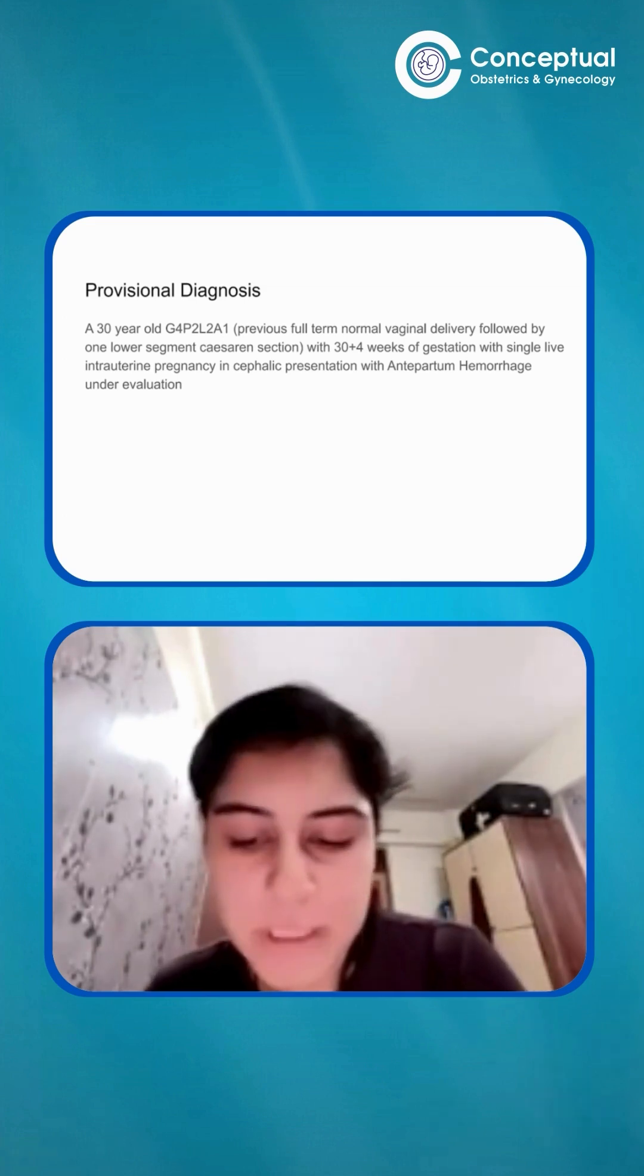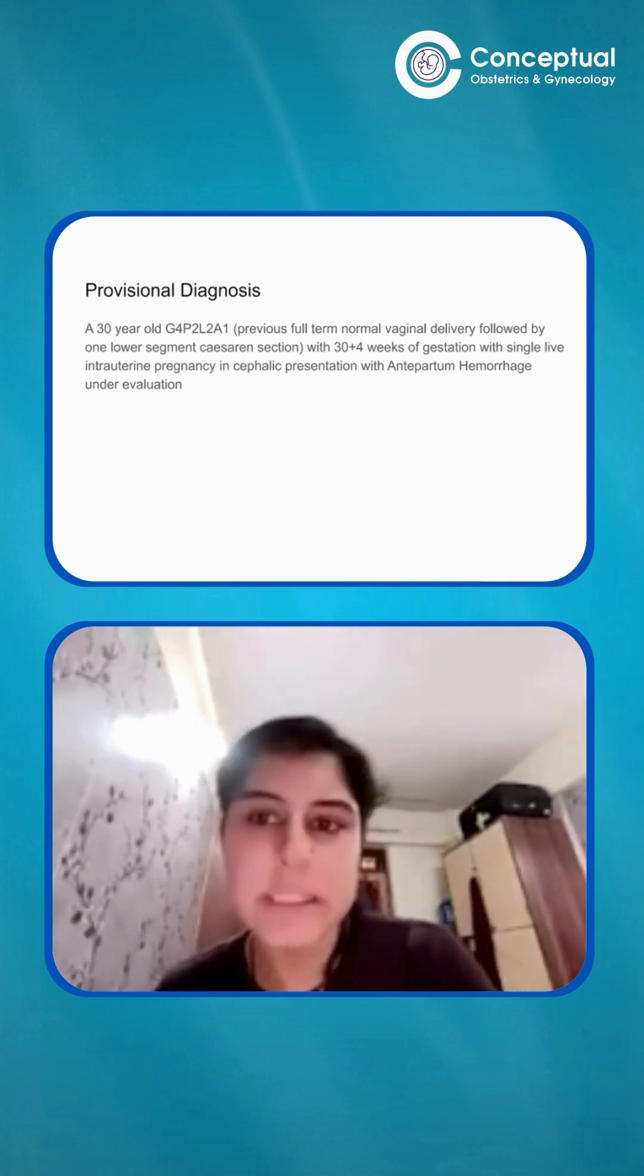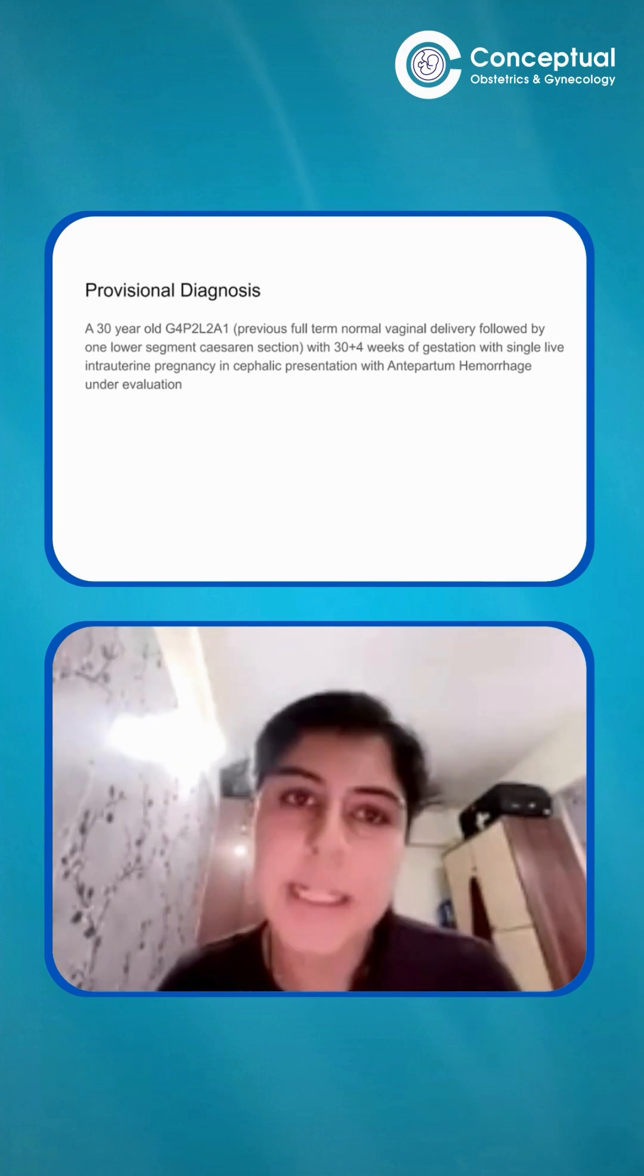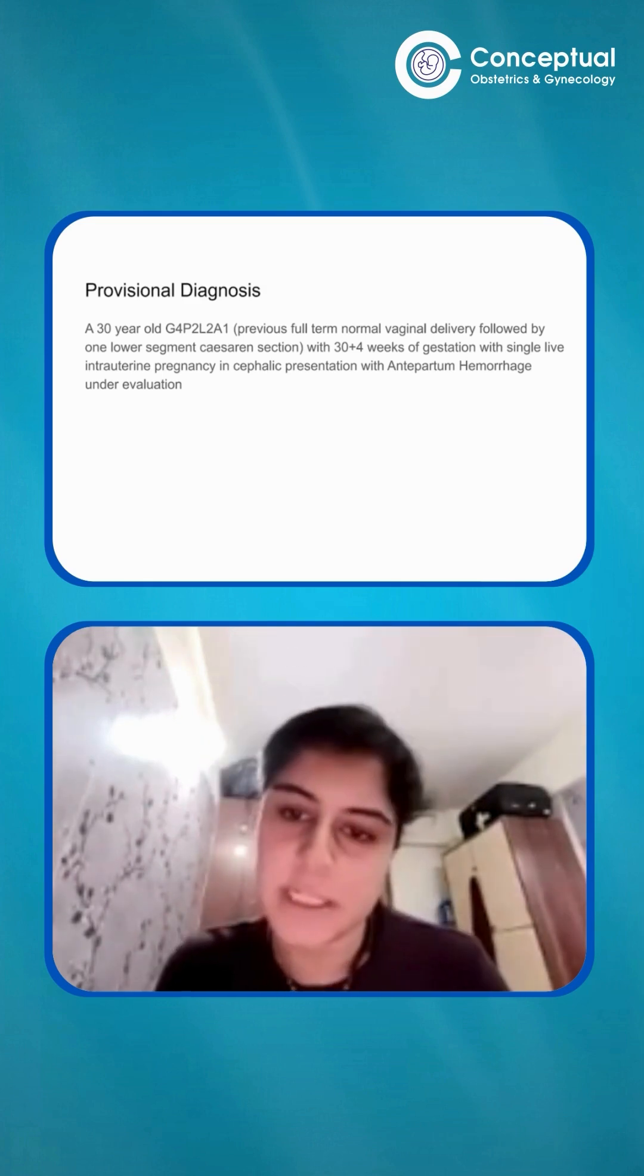However, bleeding may or may not be there in abruptio placenta. It can also be a concealed abruptio or the revealed abruptio. If a concealed abruptio is there, on examination, the uterine size, the bundle size will be more than the period of gestation.